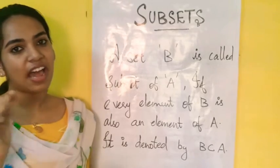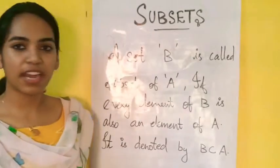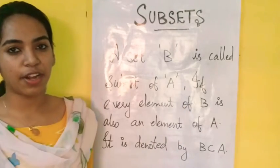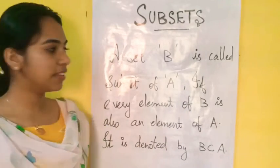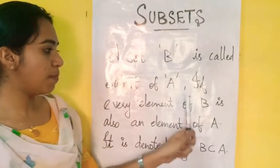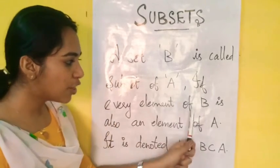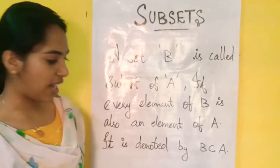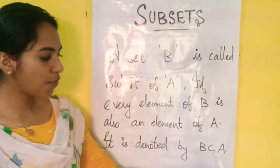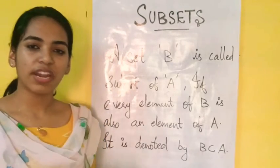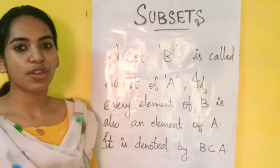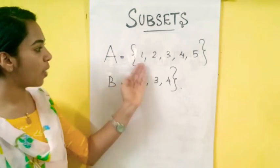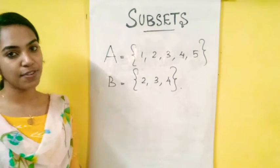That means if B and A are two arbitrary sets — two sets — then B is a subset of A if every element of B is also in A. For example, A is a set with elements 2, 3, 4, 5 — five elements in the first set.